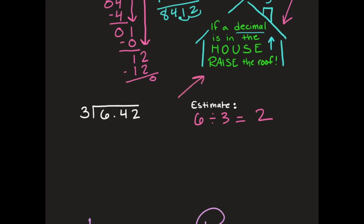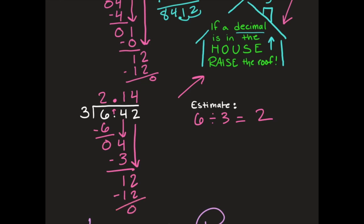If a decimal is in the house, raise the roof — I'll move that decimal into my answer before I start. Make sure you place your answers right above each number and keep them straight. How many times can 3 go into 6? Two. Two times 3 is 6, subtract to get 0. Bring down 4. Three goes into 4 once — 1 times 3 is 3, 4 minus 3 is 1. Bring down 2. Three goes into 12 four times. Four times 3 is 12, subtract to get 0. Done.